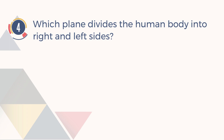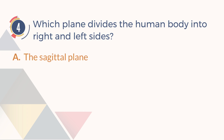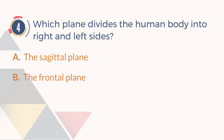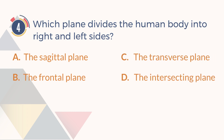Number 4. Which plane divides the human body into right and left sides? A. The sagittal plane. B. The frontal plane. C. The transverse plane. D. The intersecting plane. The answer is A. The sagittal plane.